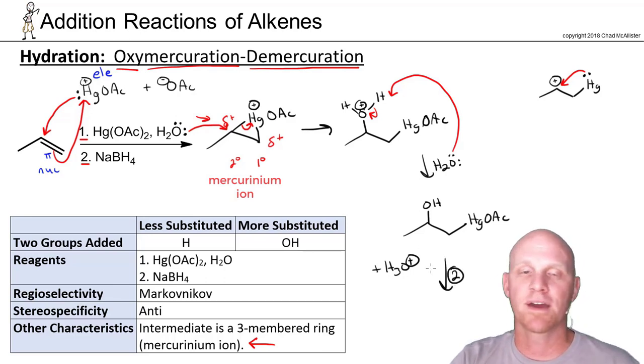You do not need to know the mechanism for step two for most classes. In fact, we're not completely positive on the mechanism for step two. So I've found it hard to believe that somebody would require you to know something that we don't for sure know. But the net result in step two is that we're going to replace the mercury with just simply a hydrogen. So you're probably responsible and on the hook for the mechanism in step one, but not for step two.